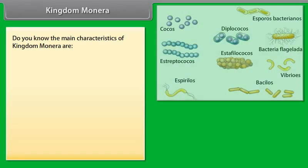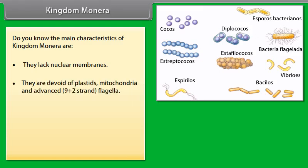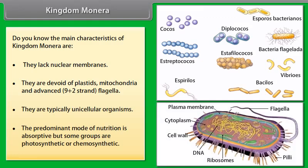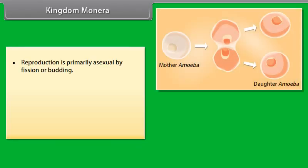The remaining two kingdoms, Protista and Monera, included unicellular and simple cellular colonies. Later, Carl Woese made a modification by dividing Monera into two sub-kingdoms: Archaebacteria and Eubacteria. All organisms are classified into various levels as follows: Kingdom, Phylum (Animals) / Division (Plants), Class, Order, Family, Genus, Species. The basic unit of classification is Species.